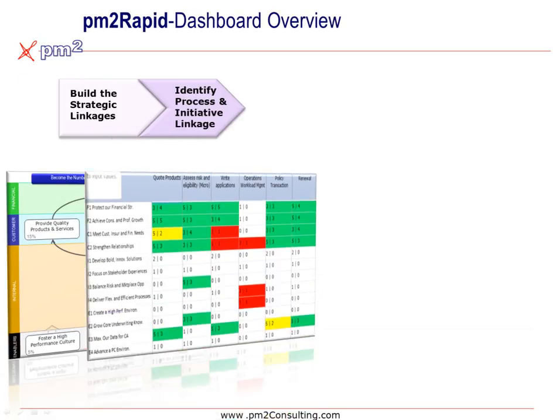Second, we need to identify the actions that people do day-to-day that link back to that strategy — the processes and process improvement initiatives, and how well they're currently performing.